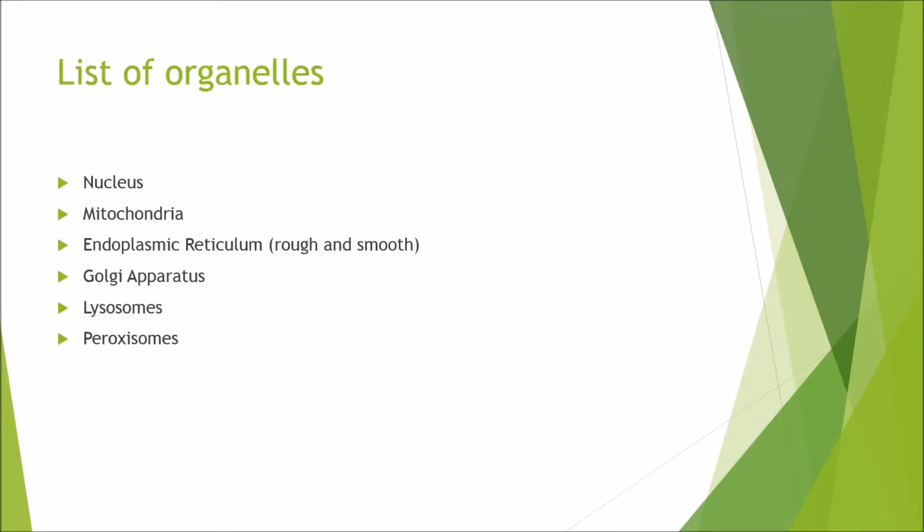To start off with, in our human cells the six main organelles you will find would be the nucleus, endoplasmic reticulum rough and smooth, Golgi apparatus, lysosomes, and peroxisomes.